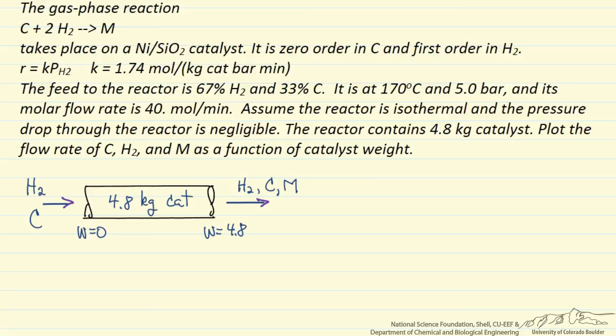The form of the mass balance is the change in the molar flow rate of C with respect to catalyst weight, and that is equal to the rate of reaction of C, which in this case is minus the rate constant times the pressure of hydrogen to the first power. The minus sign is because of the stoichiometry of the reaction. The reactants have minus, the products have positive signs for the stoichiometric coefficient.